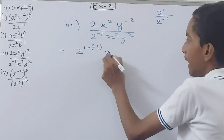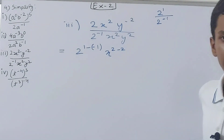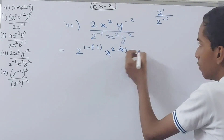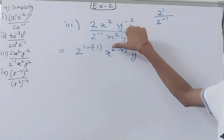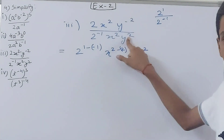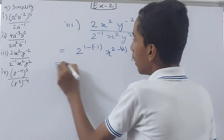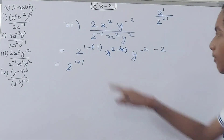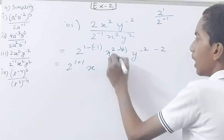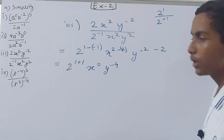For x: 2 minus 2, which gives x to the power 0. For y: the numerator has y to the power minus 2 and the denominator has y to the power 2, so we do minus 2 minus 2 = minus 4. So we get 2 to the power 1 minus minus 1 = 2, x to the power 0, y to the power minus 4.